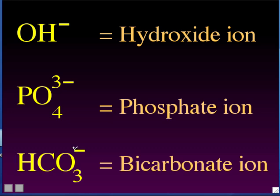Phosphate ions sometimes get their own symbol different from their molecular formula — they are often shown as a circled P. When you're reading the textbook or looking at figures, if you see a circled P, that means phosphate ion — one phosphate molecule, PO₄, with a negative three charge on it.